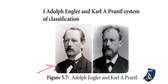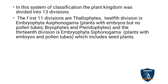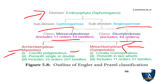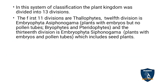This is Adolf Engler and Karl A. Prantl. In this system of classification, the plant kingdom was subdivided into 13 divisions. The first 11 divisions are Thallophyta. The 12th division is Embryophyta Asiphonogamae — plants with embryo but no pollen tubes — that is, Bryophytes and Pteridophytes. The 13th division is Embryophyta Siphonogamae — plants with embryo and pollen tubes — which are the seeded plants.